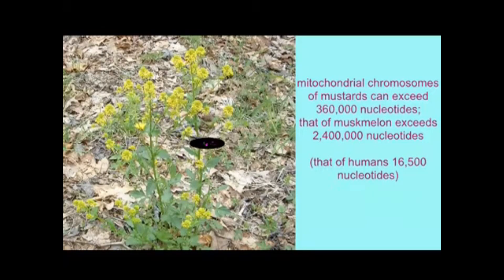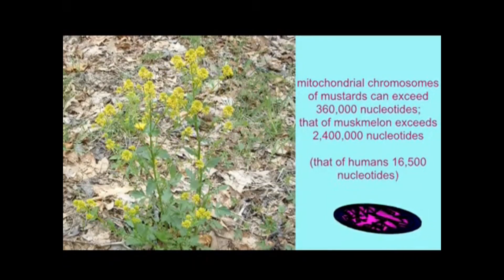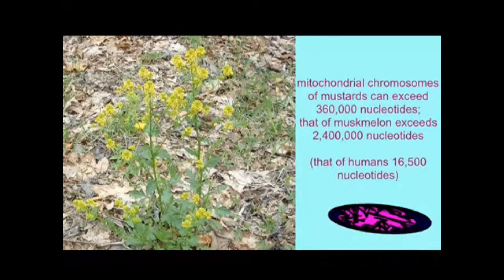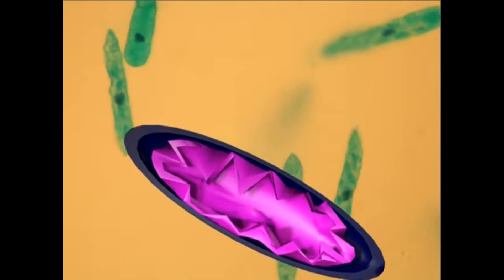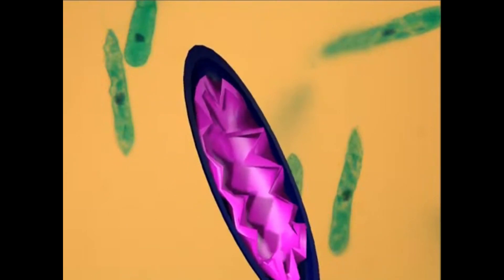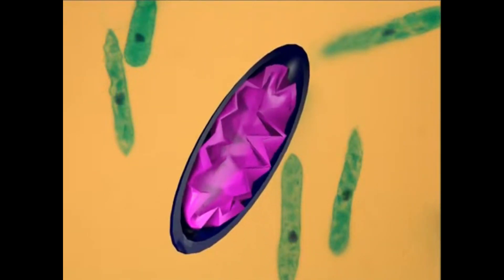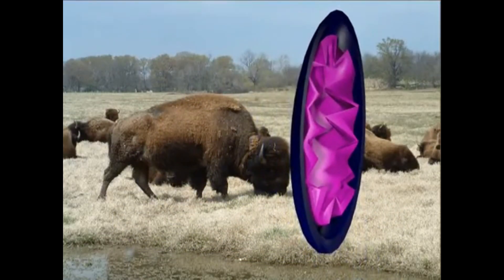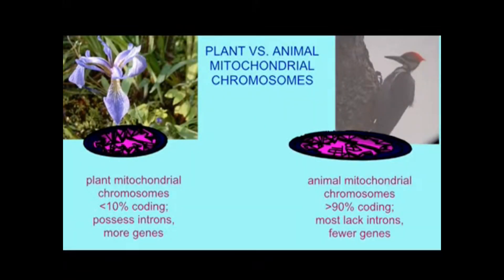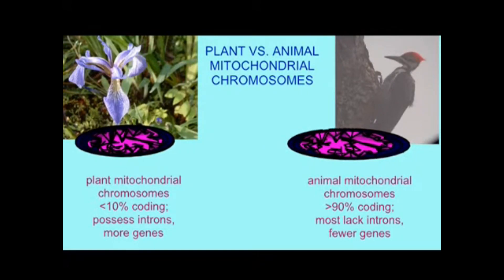Mitochondria have changed over time, and so the mitochondria found in one animal species are not identical to the mitochondria found in another animal species. For example, the chromosome may vary in the number of genes it possesses. In the same way, plant mitochondria are not identical to those of animals. The DNA chromosome of plant mitochondria typically is much larger and can have up to 2 million nucleotides, whereas that of humans only has 16,000 nucleotides.